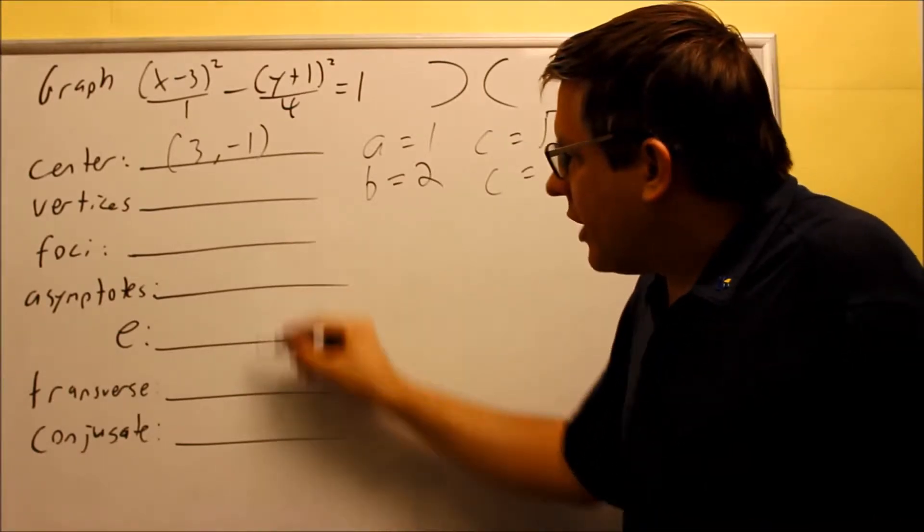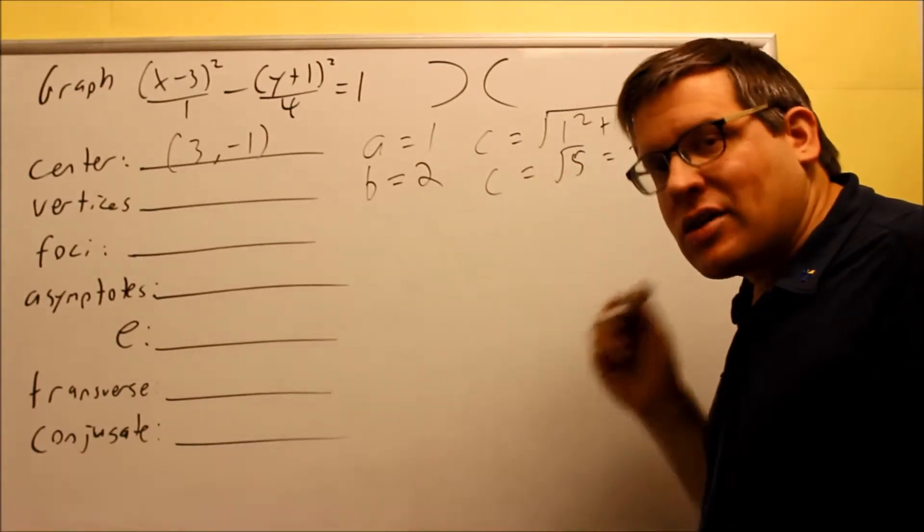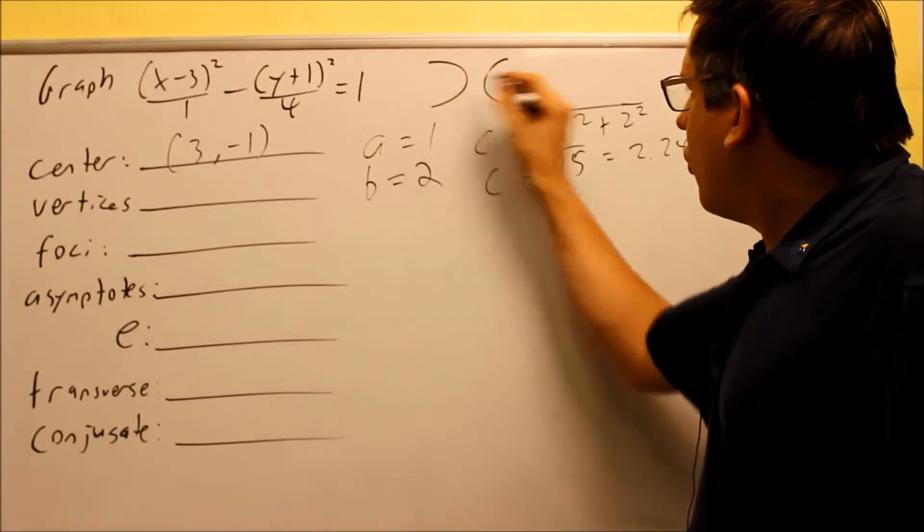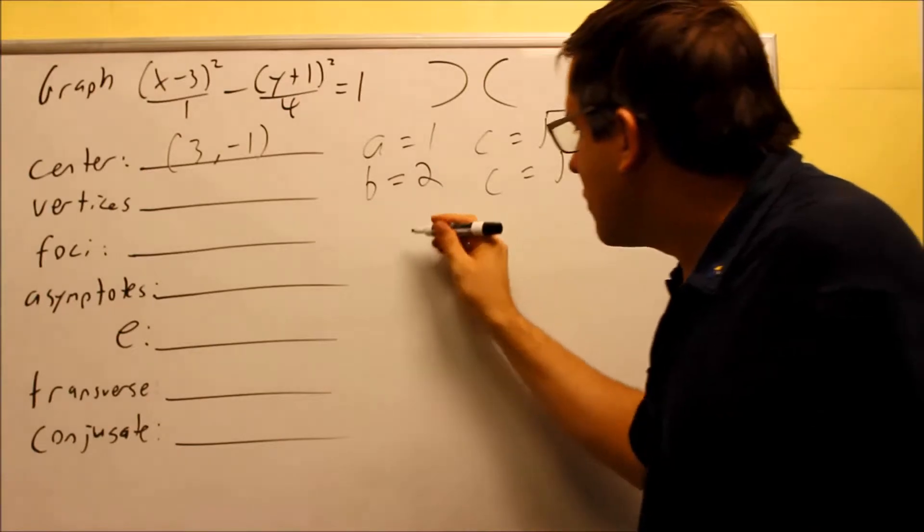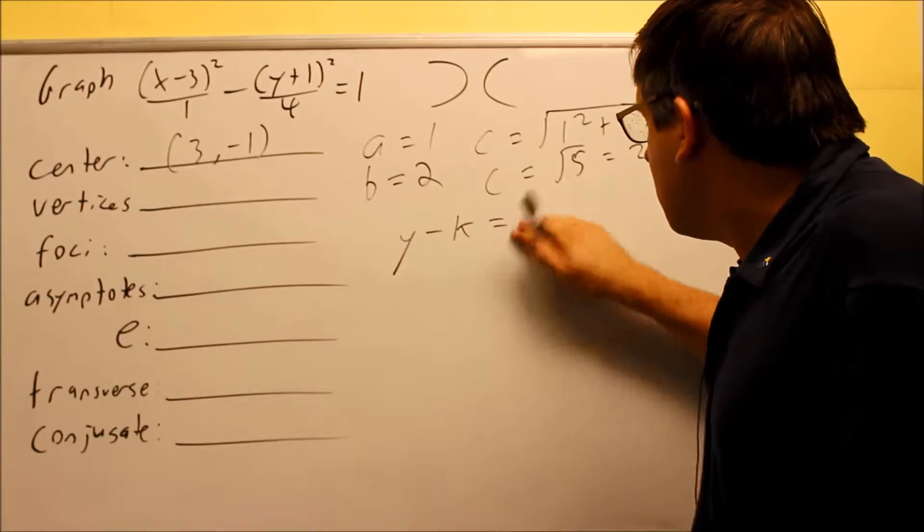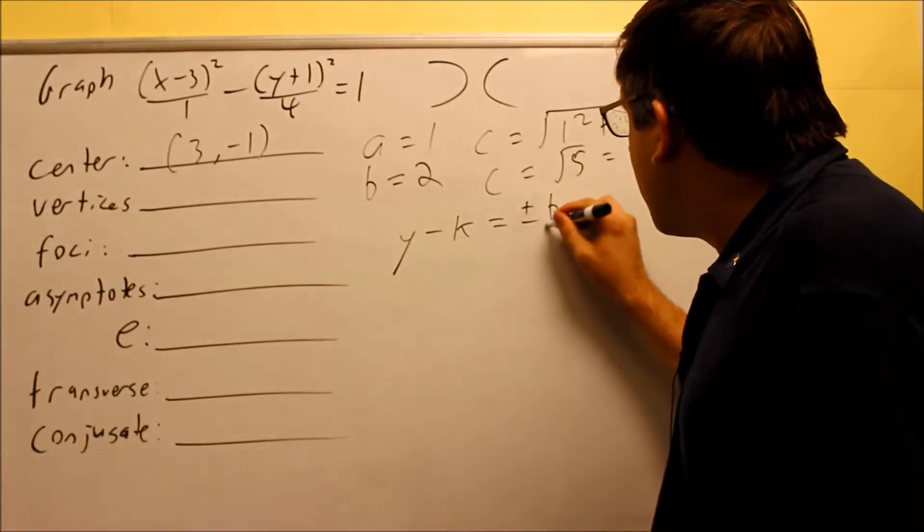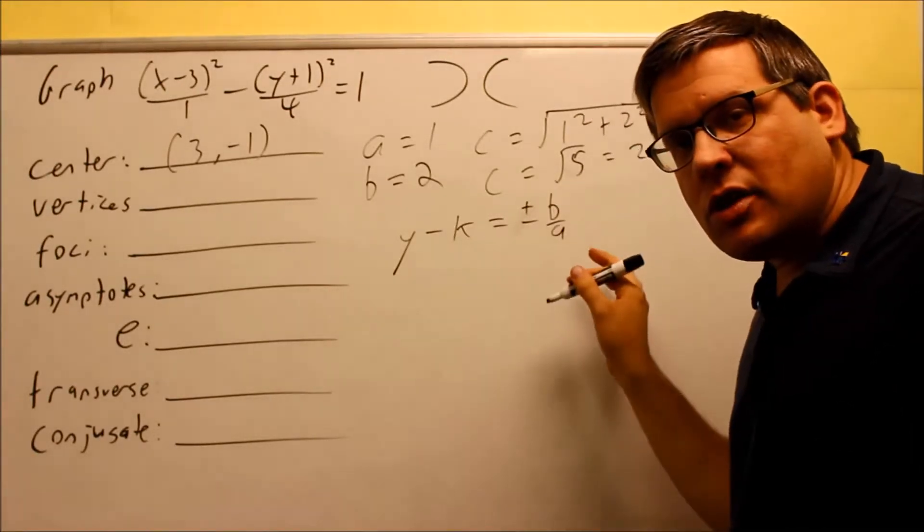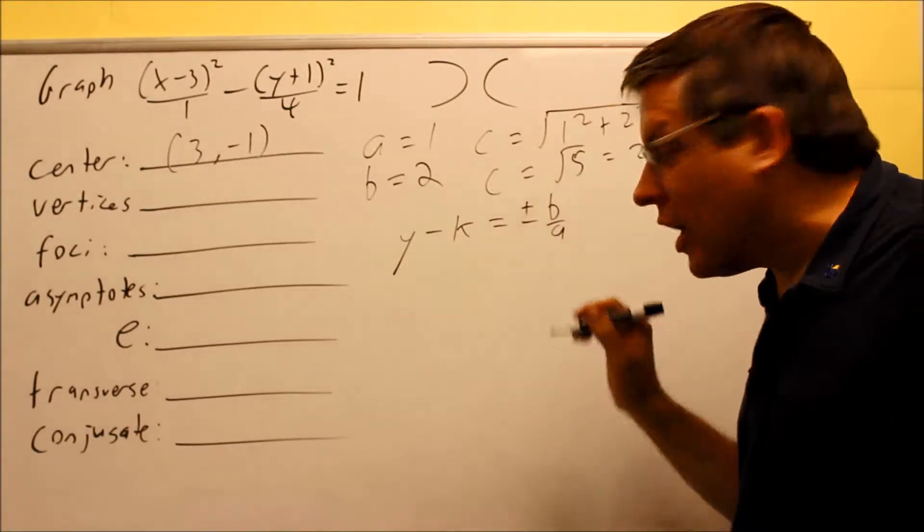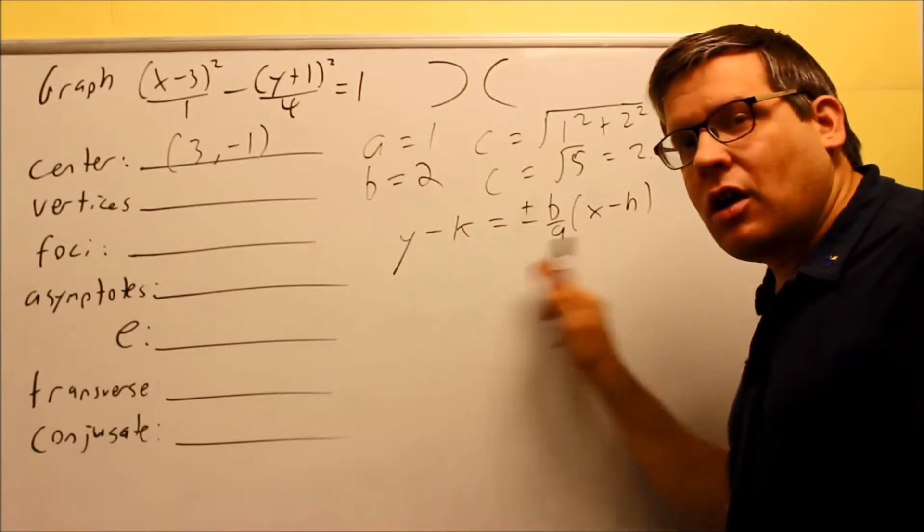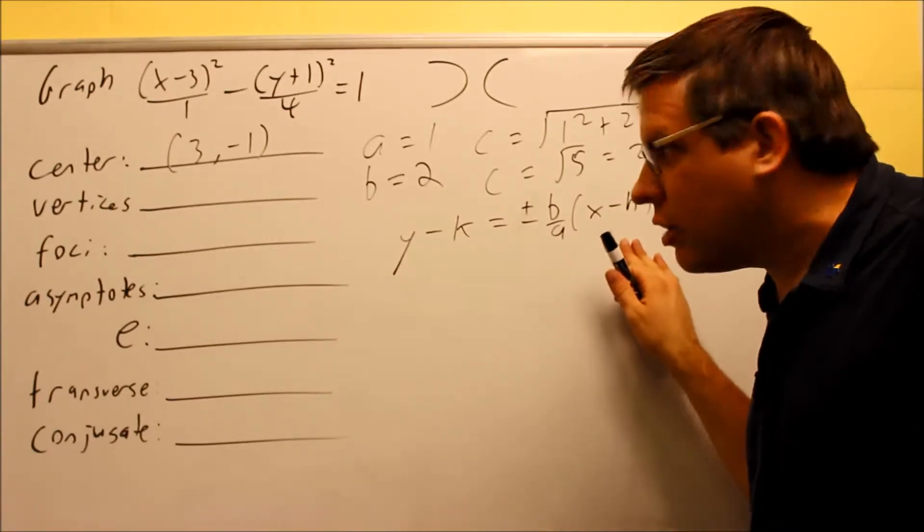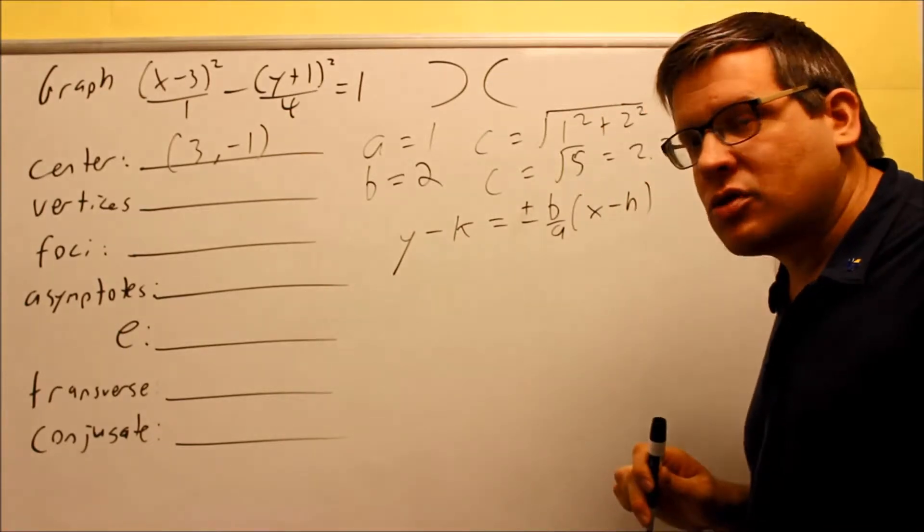Next, we're going to jump down and do these. Now, as I mentioned before, the asymptotes, there's a formula that is in your notes for a hyperbola that opens up sideways. Let me go ahead and write it out for you. Y minus K equals plus or minus B over A. That's the same slope as if it would be centered at the origin. So again, if it opens up sideways, you always have B over A and you have X minus H. This is given in point-slope form. So this is the actual formula from the notes that you're going to use in order to do the asymptotes.